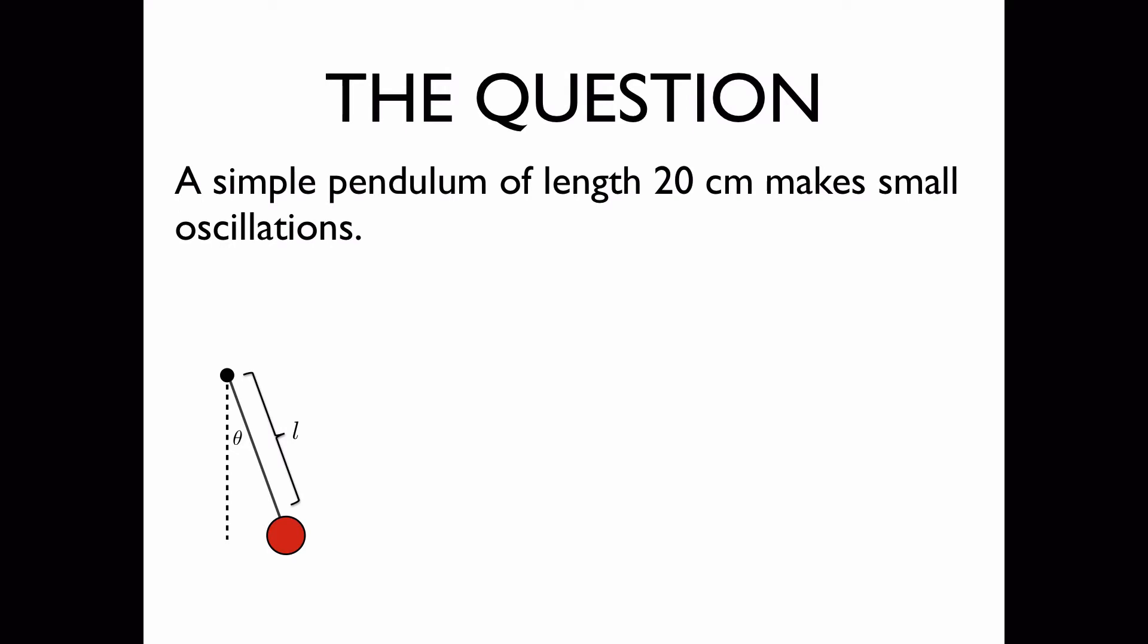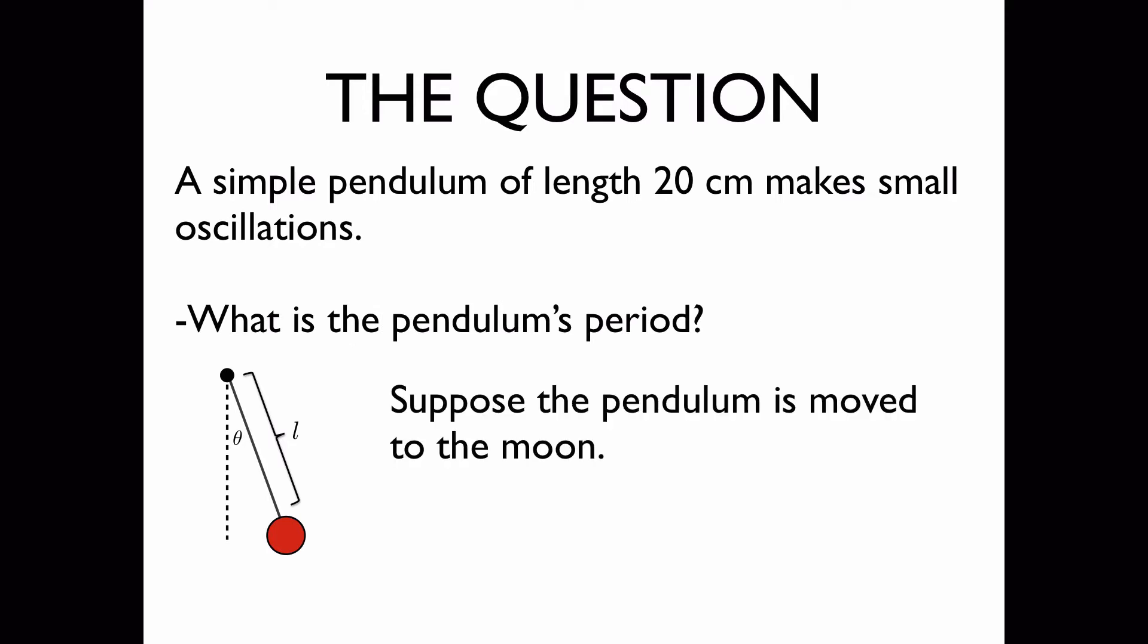The question. A simple pendulum of length 20 cm makes small oscillations. We'd like to know what is the pendulum's period, and supposing the pendulum is moved to the moon, what is the new period on the moon?